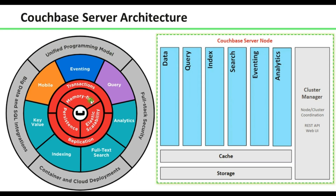Looking at the Couchbase architecture, as shown in the diagram, it is a memory-first database that also supports persistence — meaning it supports permanent storage as well. It is elastically scalable and provides replication. These are the list of services that we are going to discuss.